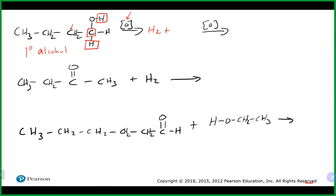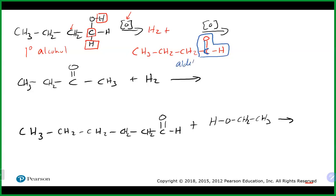Once we remove the two hydrogens, we insert a double bond between carbon and oxygen — otherwise the carbon and oxygen won't have enough bonds or electrons. That gives us our aldehyde functional group. Nothing else changes — don't do anything weird, just take the hydrogens out and put the double bond between carbon and oxygen.